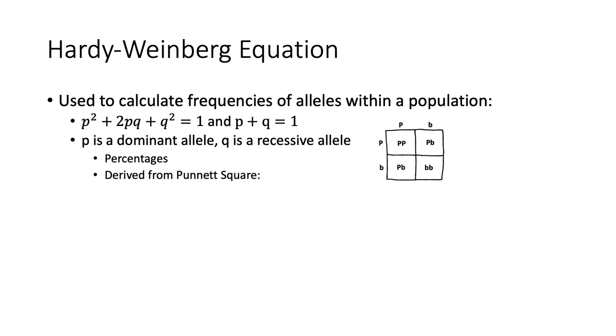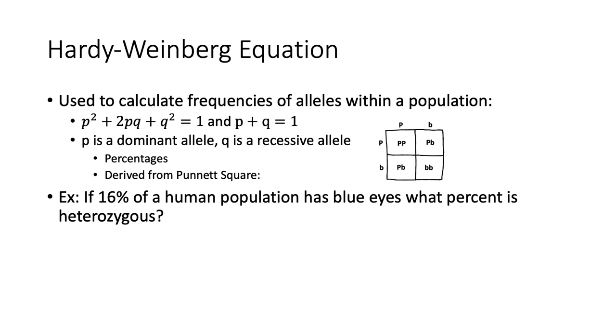All right, let's take a look at a practice problem. If 16% of a human population has blue eyes, what percent is heterozygous? Well, we know blue eyes are recessive, so q squared equals 0.16. We can take the square root to get q equals 0.4, and therefore p equals 1 minus 0.4, or 0.6, because remember, p plus q equals 1. From here, we know that the heterozygous frequency is 2 times p times q, or 2 times 0.4 times 0.6, which is 0.48, or 48%. Remember that 0 point whatever is that percentage in this case. That's just how we deal with percents.